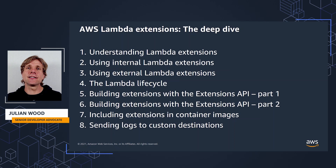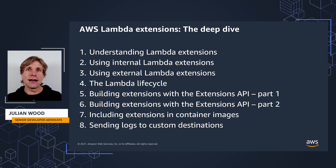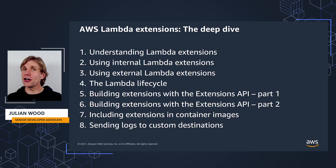I show the changes to the Lambda lifecycle and how extensions can influence how the Lambda service works. I then dive even deeper in a two-parter and show you how to build your own extensions using the extensions API. I cover container image packaging and sending logs to custom destinations. And I'll be showing plenty of demos and diving into code too.